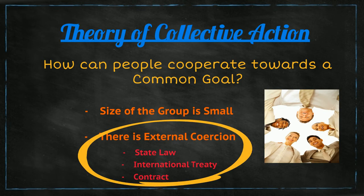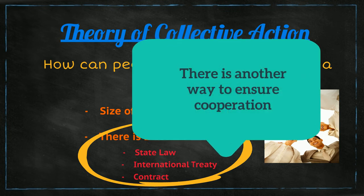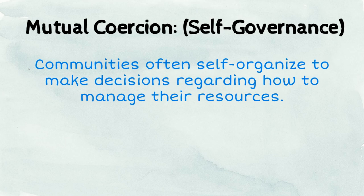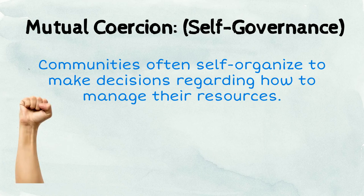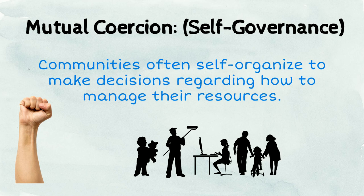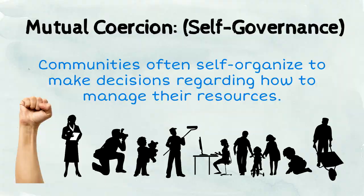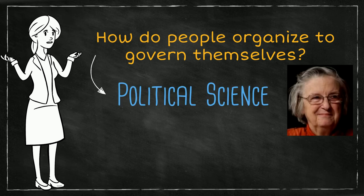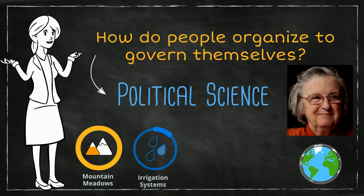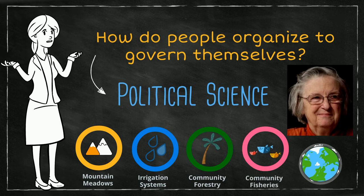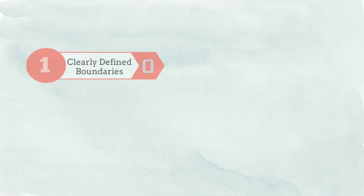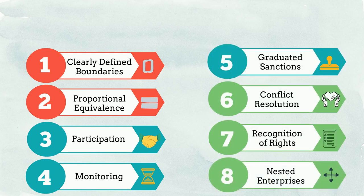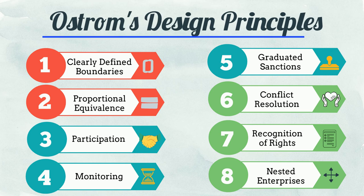But external coercion is not the only way to monitor people's actions. A group of individuals or communities can also self-organize to make rules that allow them to manage their resources — this is the case of internal or mutual coercion. This is different from external coercion because it gives power to the community members to make decisions regarding how they want to use their resources, instead of relying on an external authority. This question was examined by political scientist Eleanor Ostrom, who studied communities around the world to understand what rules and strategies work under different circumstances that allow communities to successfully manage their resources. She came up with a list of eight general principles — called Ostrom's design principles — which we will discuss in detail in the next video.